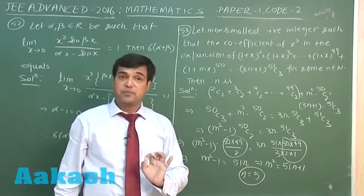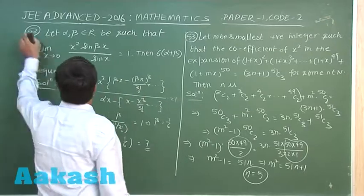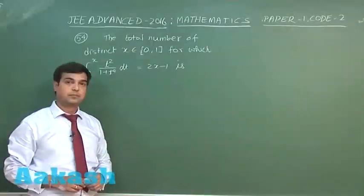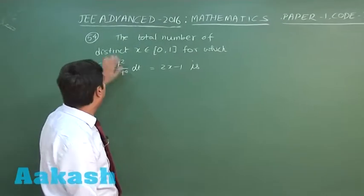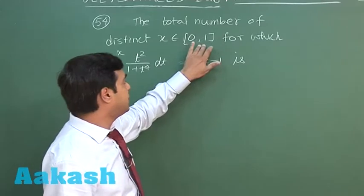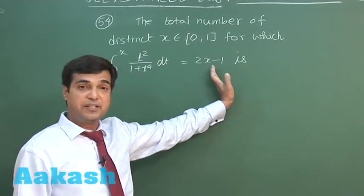Let us take the last question of this paper, question number 54. The total number of distinct x in the closed interval 0 to 1 for which this integral equals 2x minus 1 is.